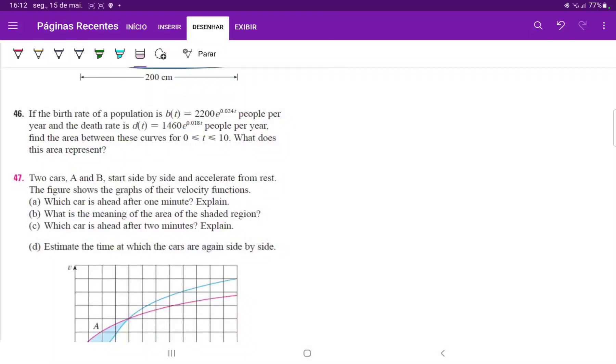Number 46, it says that the birth rate of a population goes with this function. So let us write this down. B(t) is equal to 2200e to the 0.024t,